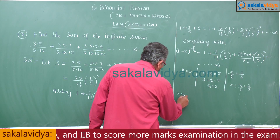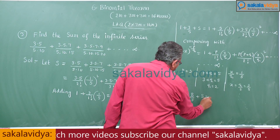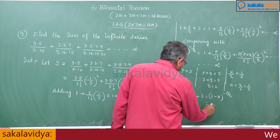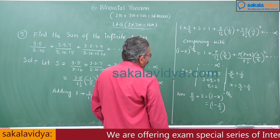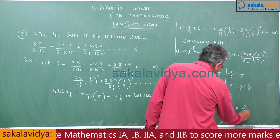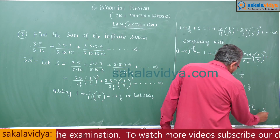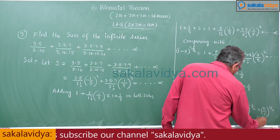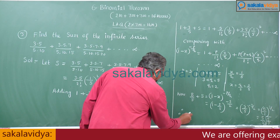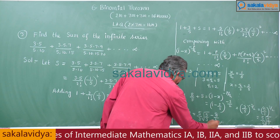Now 1 + 3/5 = 8/5, so 8/5 + S = (1 − x)^(−p/q). Substituting: (1 − 2/5)^(−3/2) = (3/5)^(−3/2). Reversing: this equals (5/3)^(3/2) = (5/3)·√(5/3). Therefore, S = (5/3)·√(5/3) − 8/5. This is our answer.